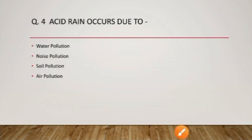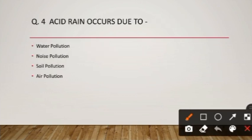Question number four: acid rain occurs due to what? Joh amliya varsha hoti hai uska karan hota hai air pollution — this happens due to the mixing of sulfur dioxide (SO₂) and nitrogen dioxide (NO₂). Yaani ki sulfur dioxide aur nitrogen dioxide ke milne ke karan amliya varsha hoti hai.